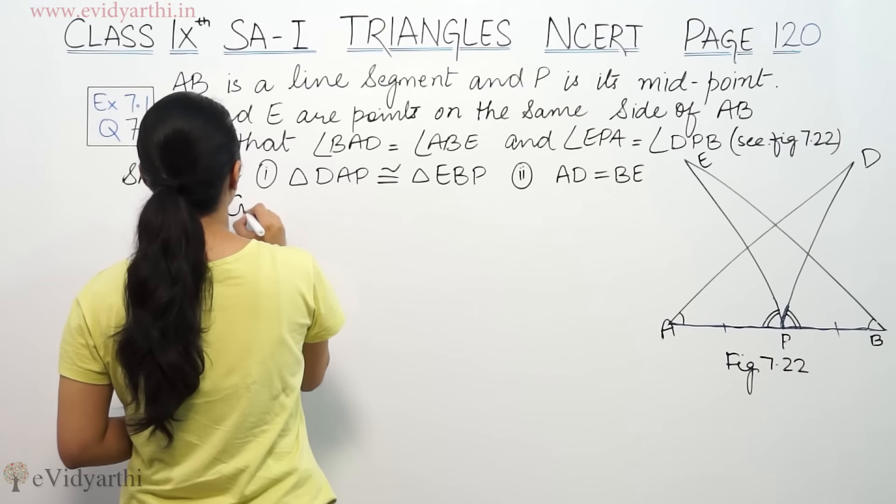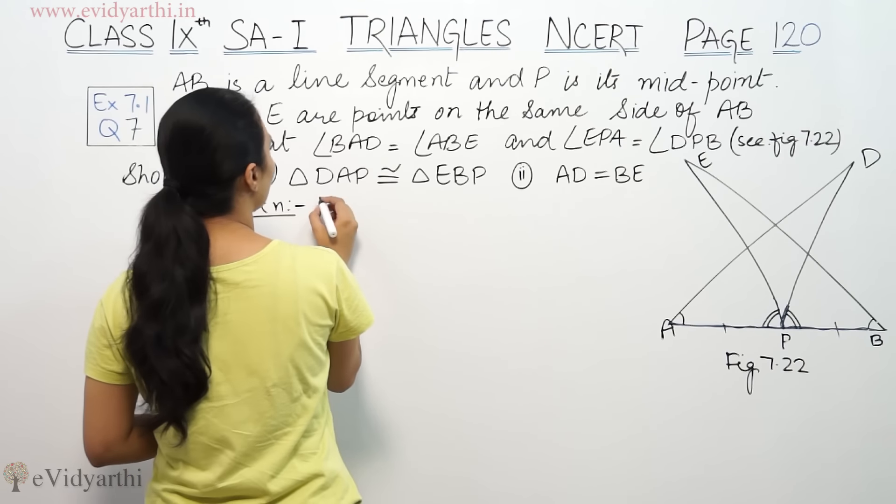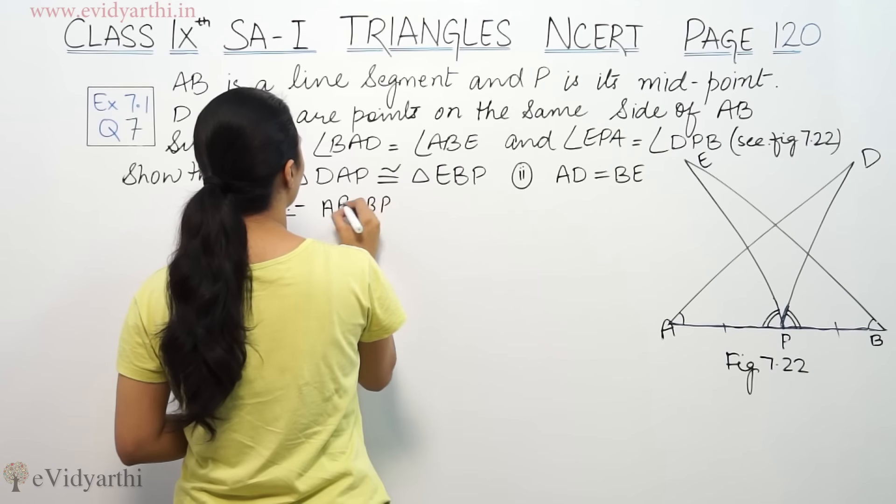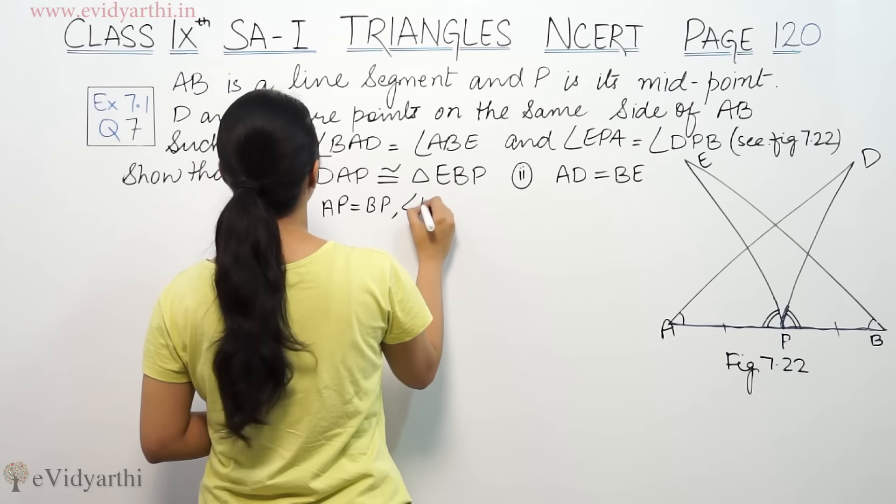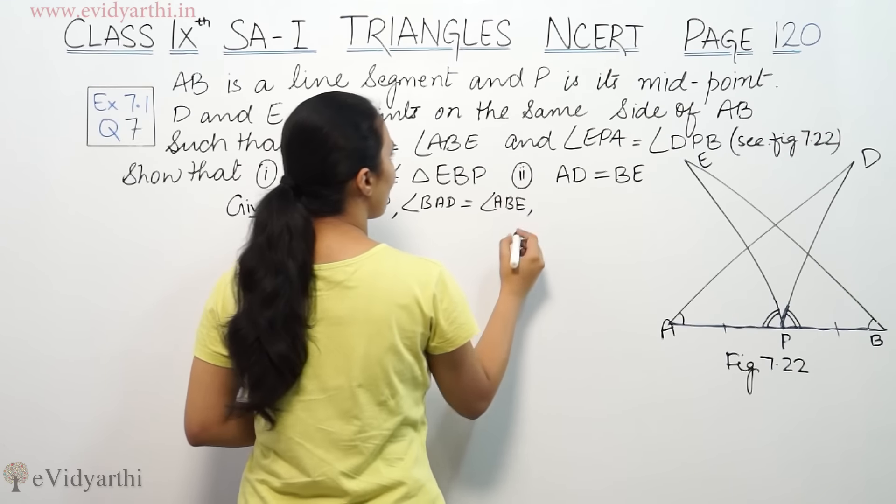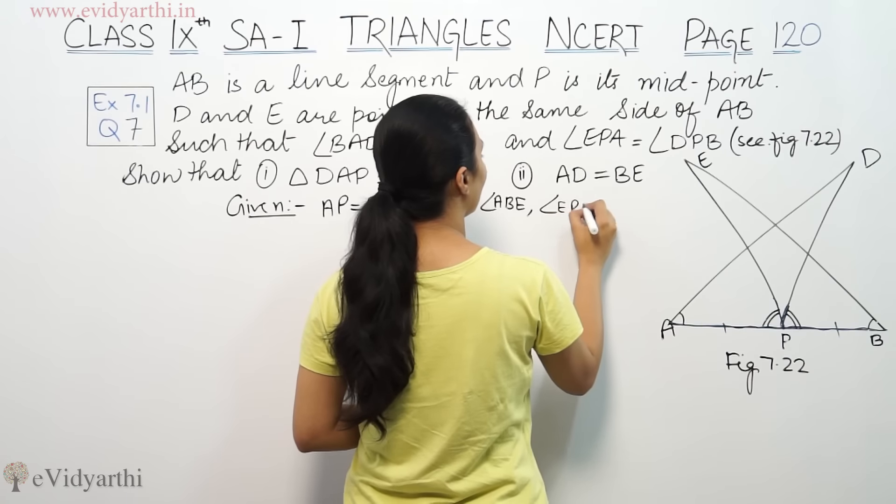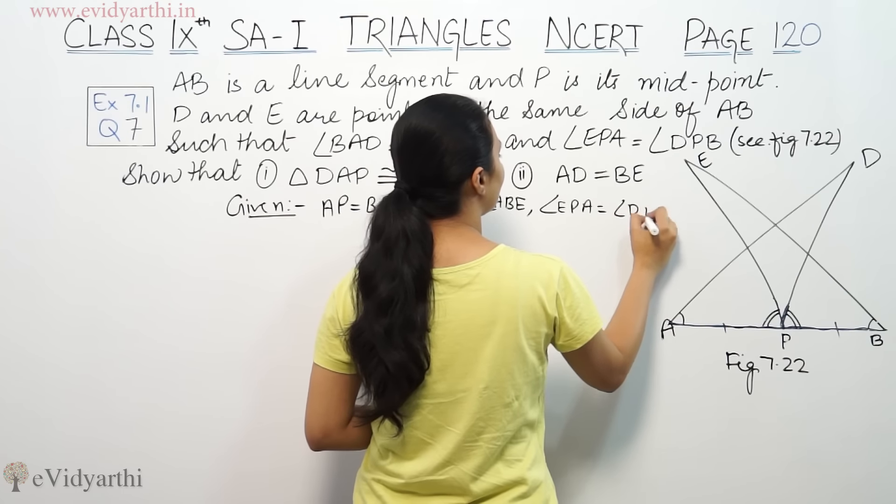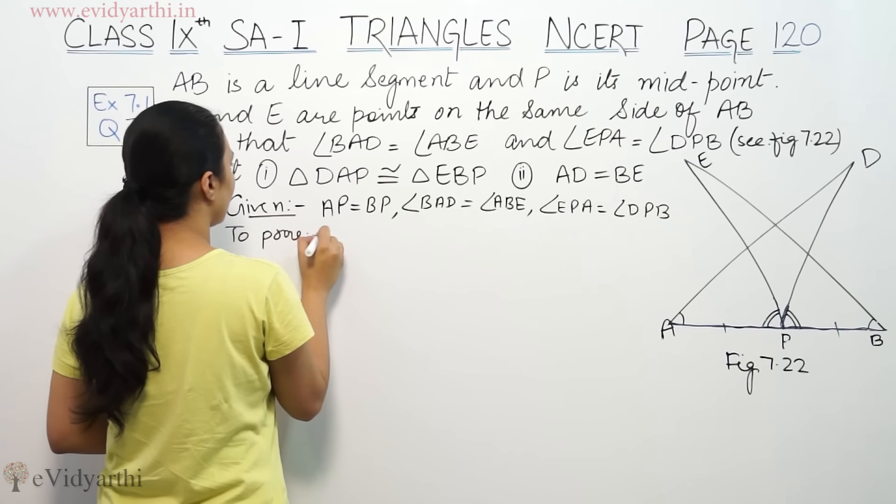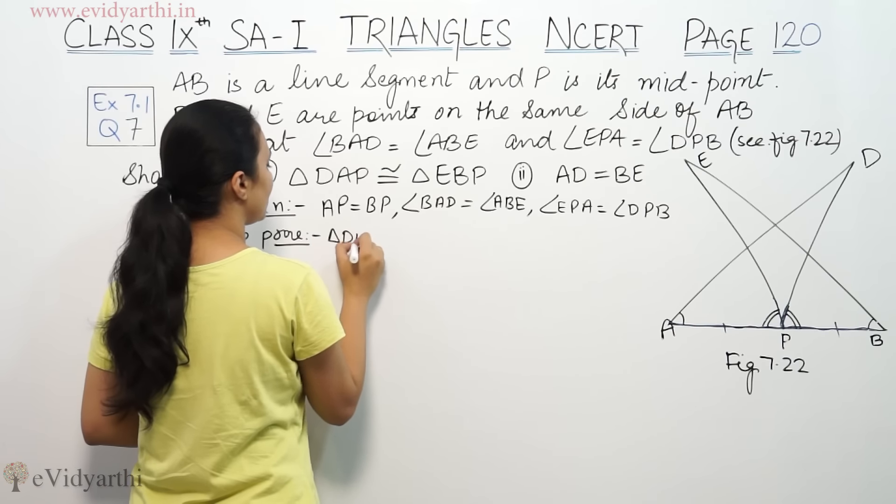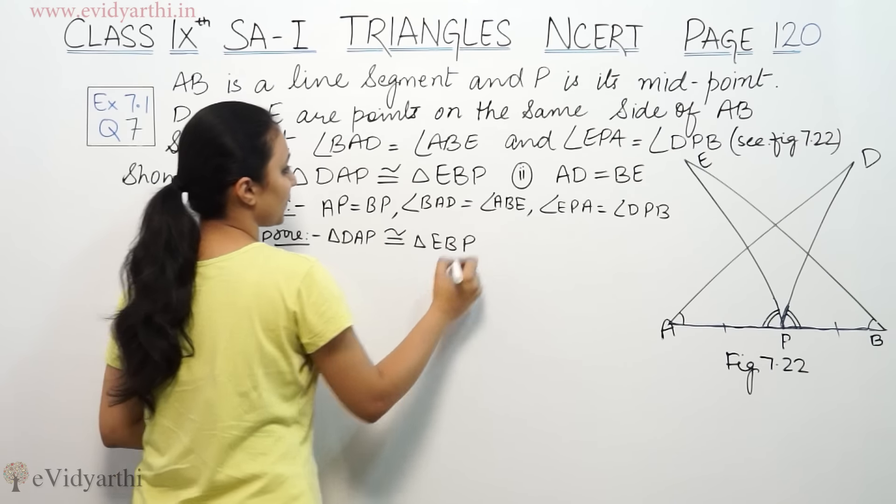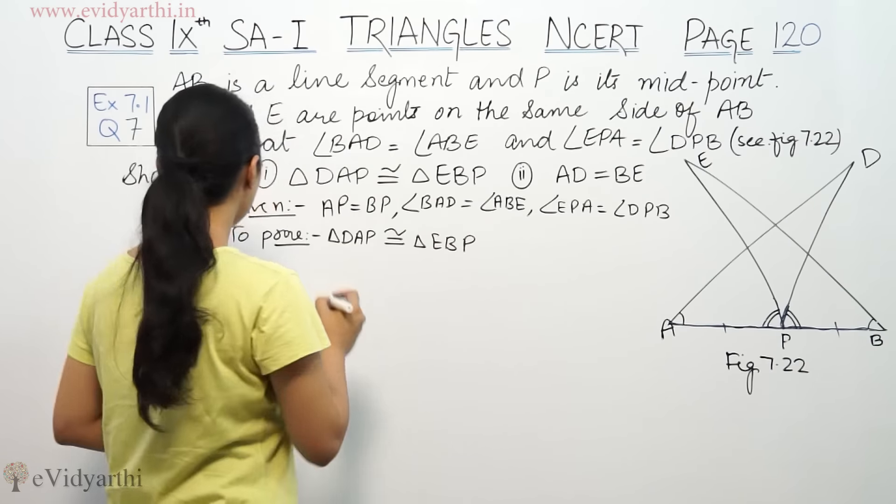First, we are given that AP equals BP, angle BAD is equal to angle ABE, and angle EPA is equal to angle DPB. We will prove that triangle DAP is congruent to triangle EBP.